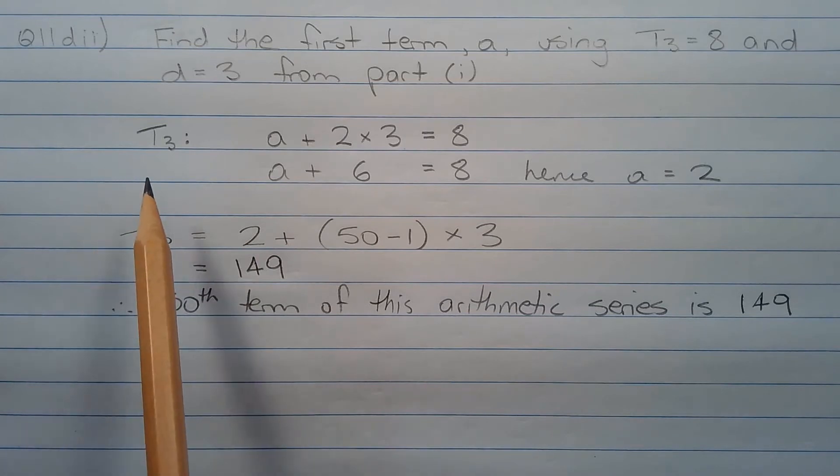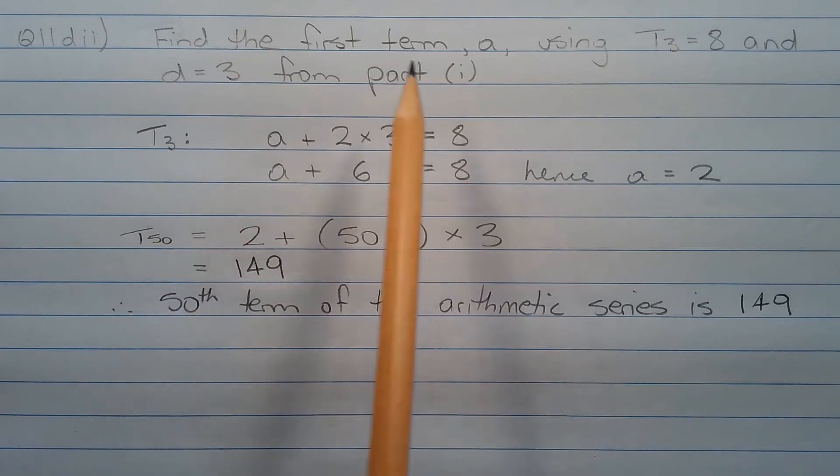Now from T3, we have a plus 2 times 3 equals 8. Simplifying this equation, we have a plus 6 equals 8. Hence, the first term a equals 2.